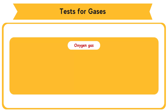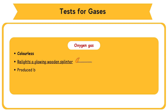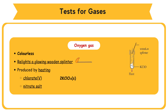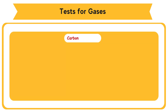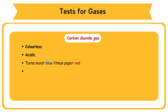Oxygen gas is a colorless gas that relights a glowing wooden splinter. It is produced by heating a chlorate or nitrate salt. 2KClO3 (solid) → 2KCl (solid) + 3O2 (gas). 2Pb(NO3)2 (solid) → 2PbO (solid) + 4NO2 (gas) + O2 (gas).